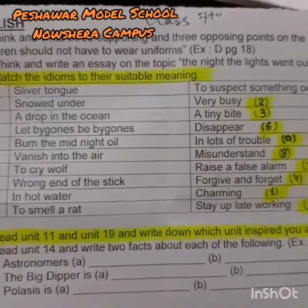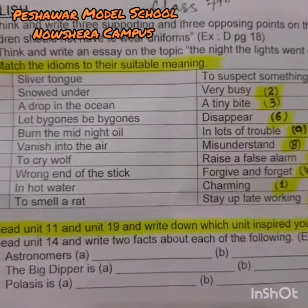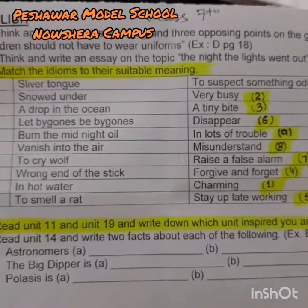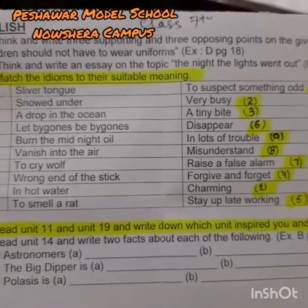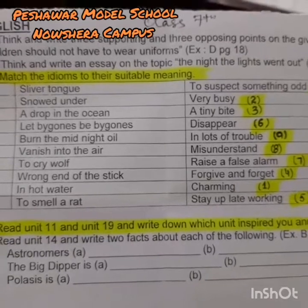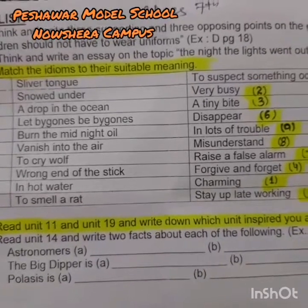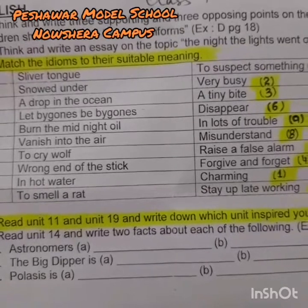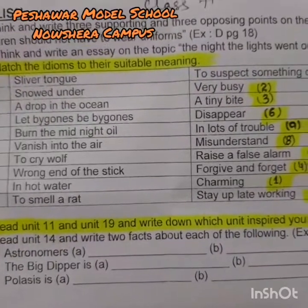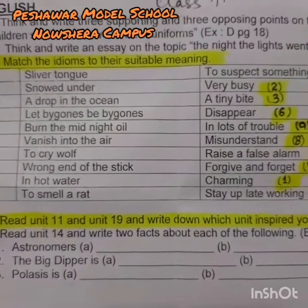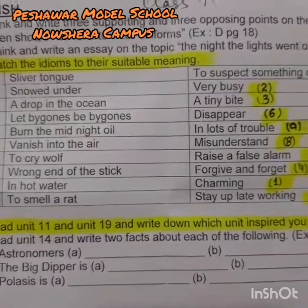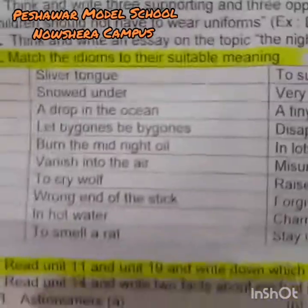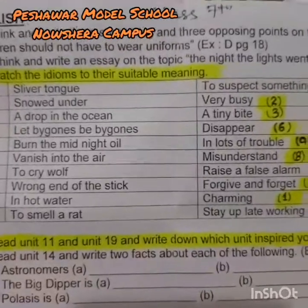The first idiom is 'silver tongue.' You can see the answer — it matches with number nine in the meanings group: 'charming.' When someone is charming, we say they have a silver tongue. Next is 'snowed under,' which is number two. If someone is very busy, you say they are snowed under.